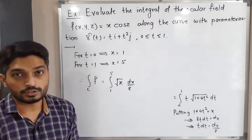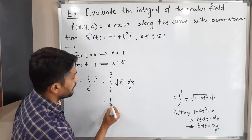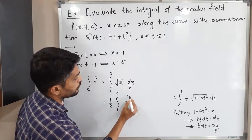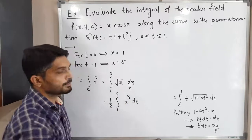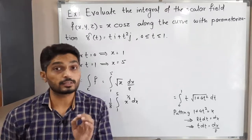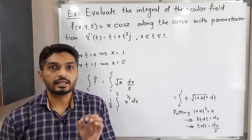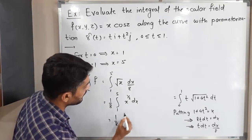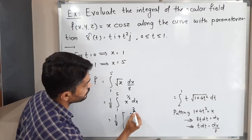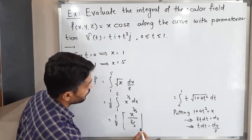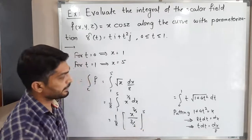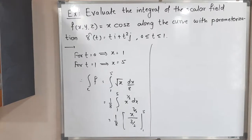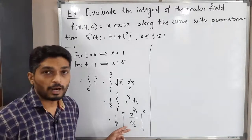The constant 1/8 comes outside the integral, giving (1/8)∫₁⁵ x^(1/2) dx. Applying the power rule ∫xⁿ dx = x^(n+1)/(n+1), with n = 1/2, this becomes (1/8) · [x^(3/2)/(3/2)] from 1 to 5.